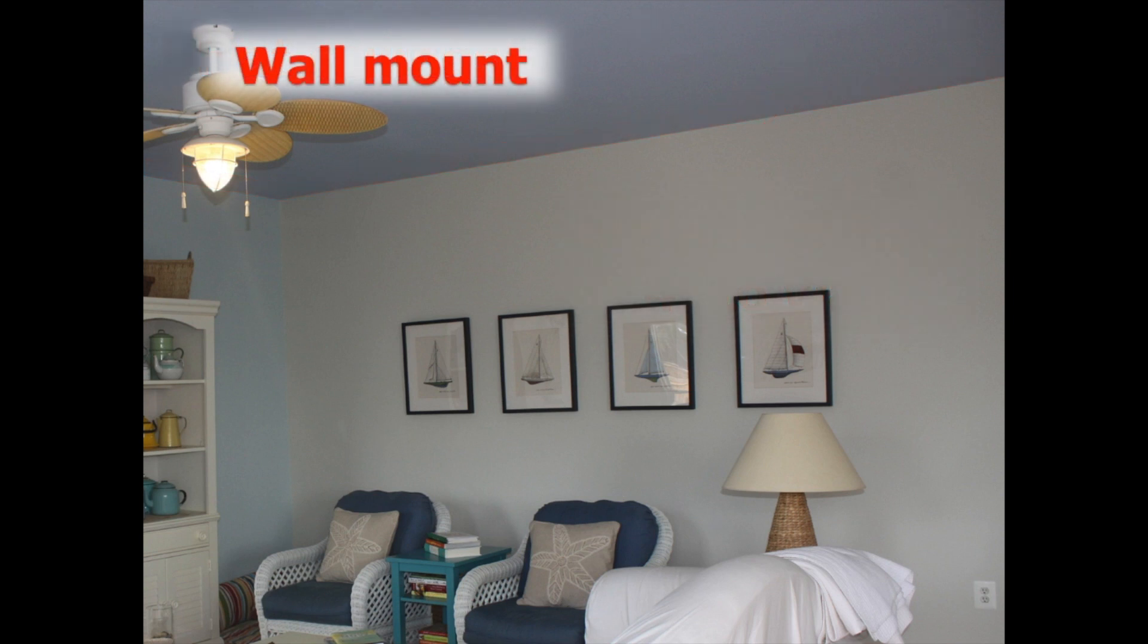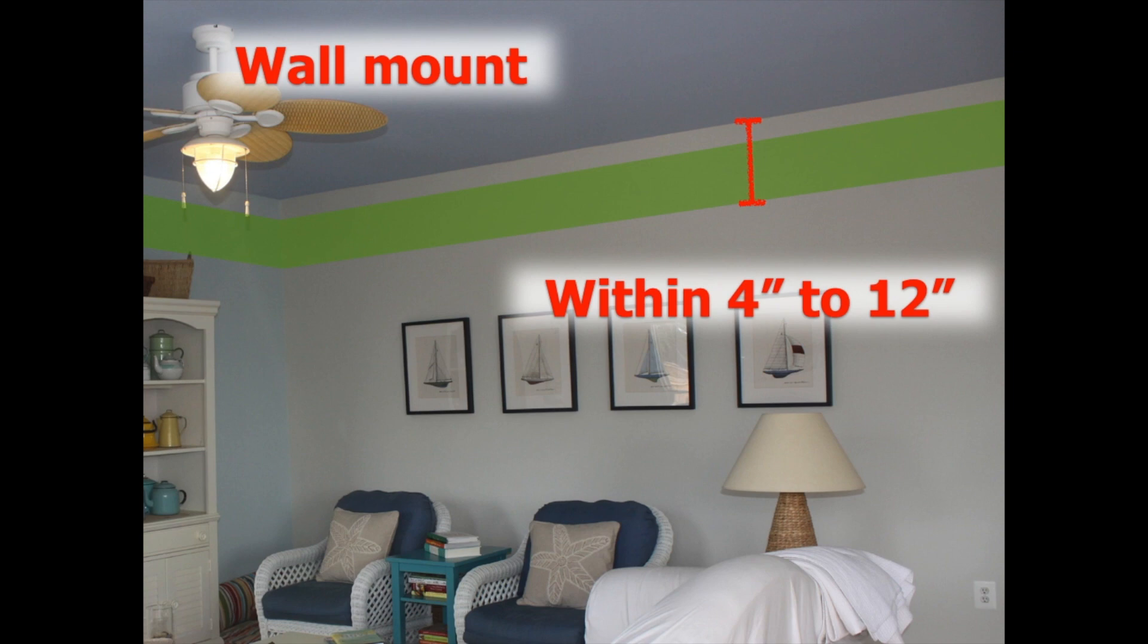For a wall mount on flat ceilings, you have to be within four inches to 12 inches of the top of that ceiling.